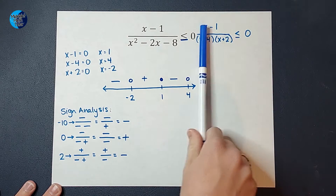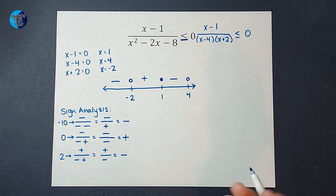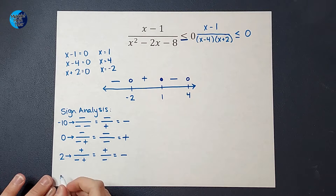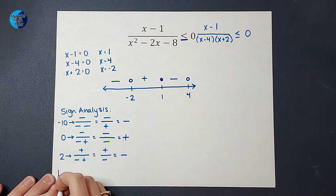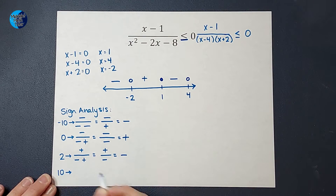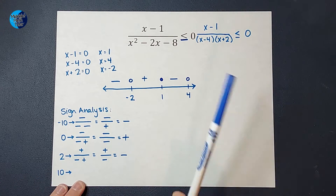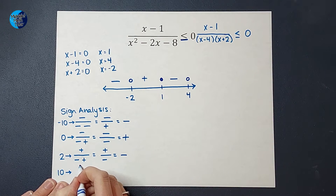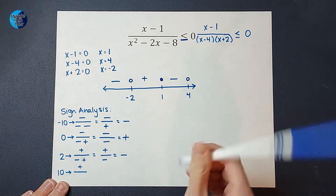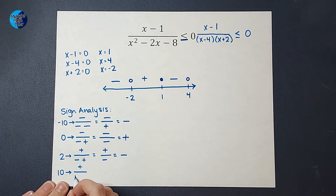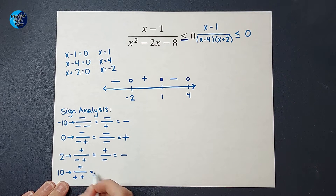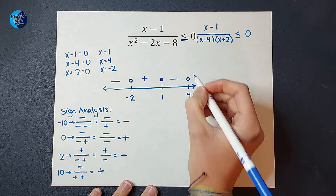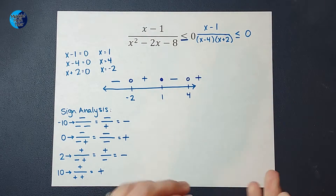Now I need any number to the right of 4. Let's pick 10 and see what that region looks like — positive or negative. 10 minus 1 gives a positive. 10 minus 4 gives a positive. 10 plus 2 gives a positive. All those positives end up being positive, so this region is positive.